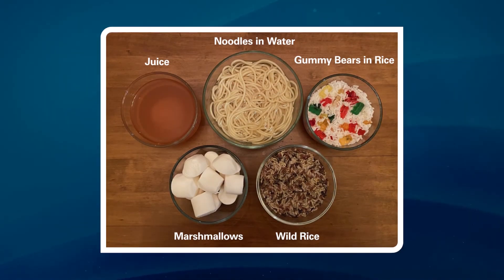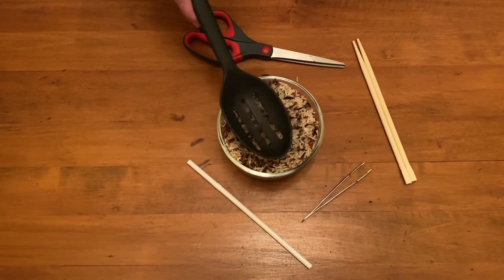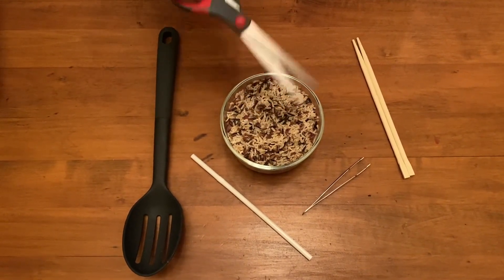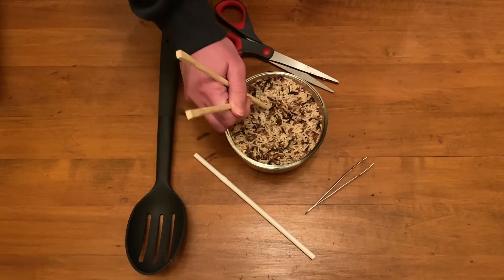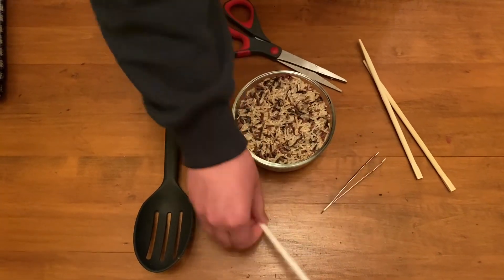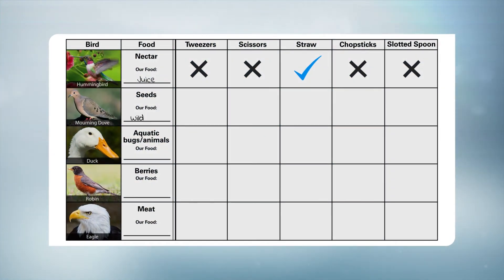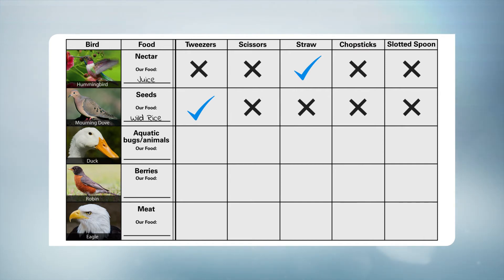Moving on to the mourning dove — remember they eat mostly seeds. Wild rice looks very similar to seeds. Try each tool and keep in mind there may be more than one that works, but we are trying to find the best tool for picking up seeds. The tweezers seem to be the most effective. Grab your journal and record your data: wild rice is the food similar to seeds, put X's in the boxes for tools that don't fit, and a check for the tweezers.